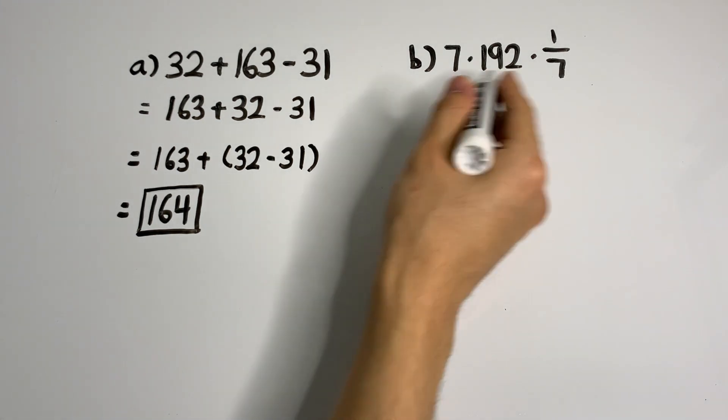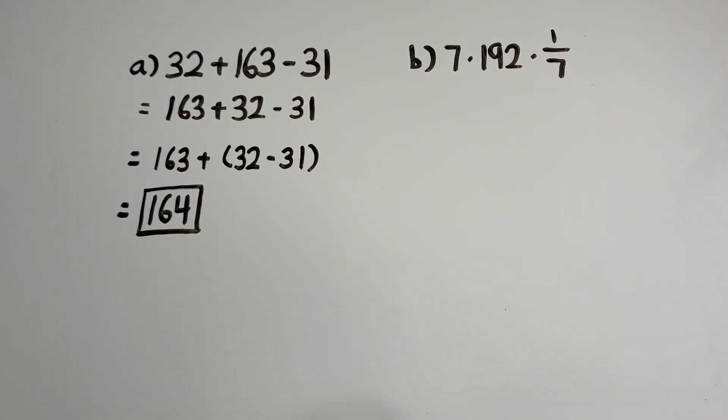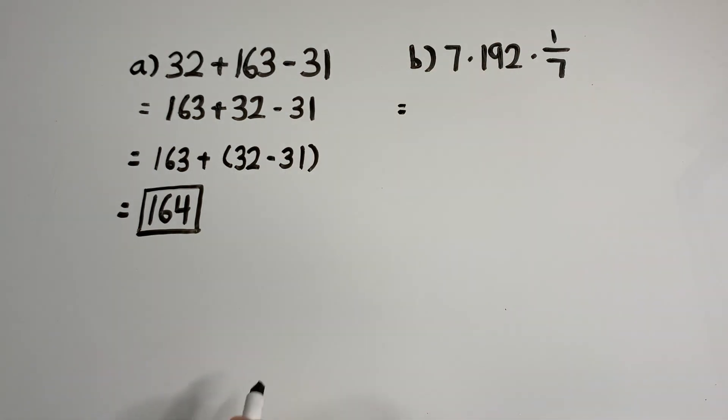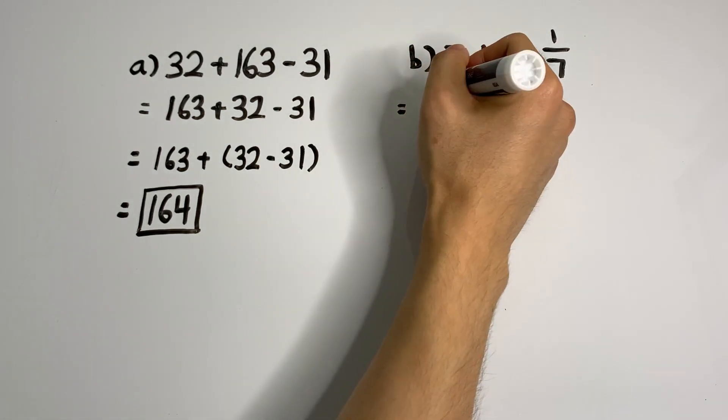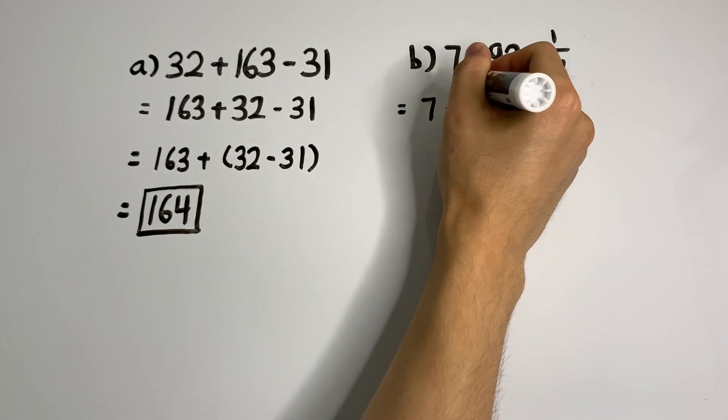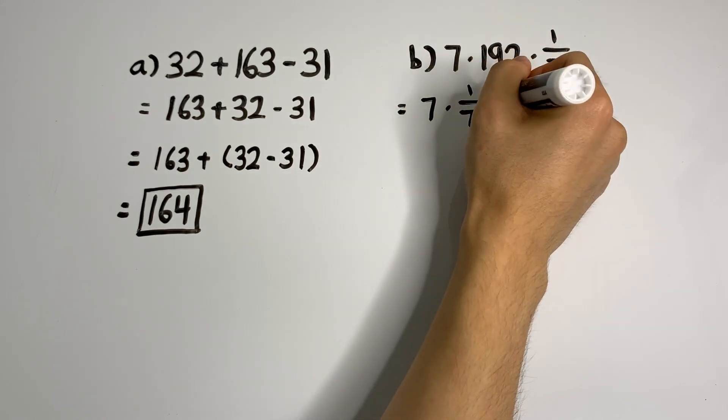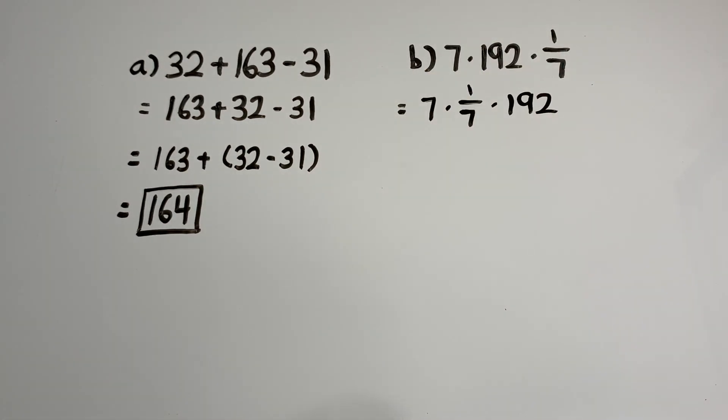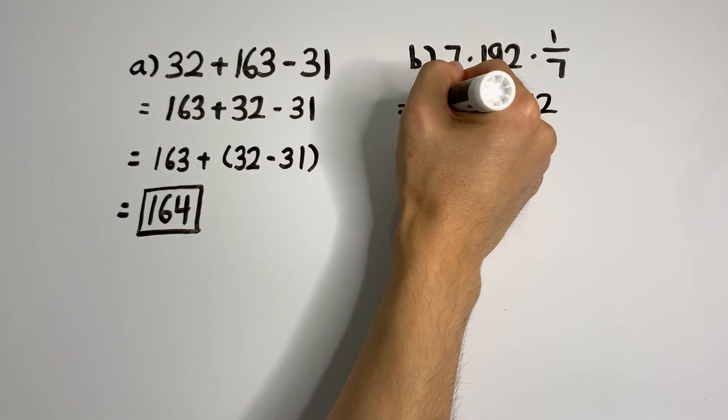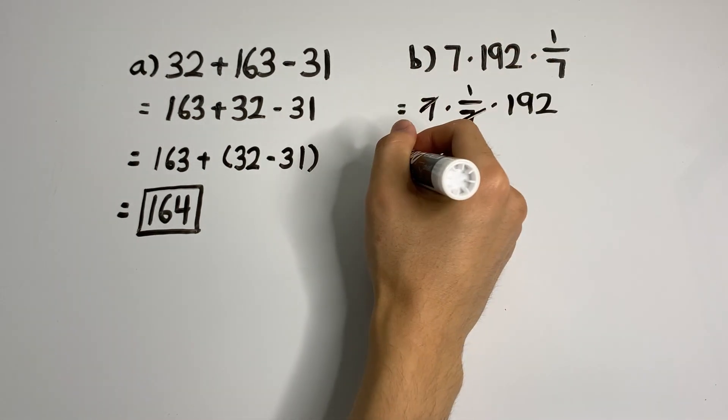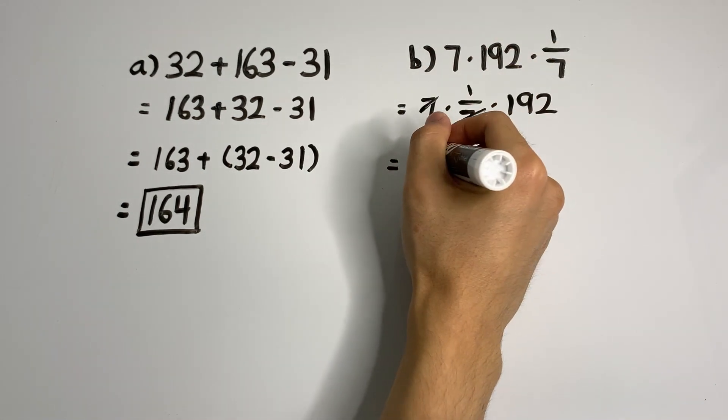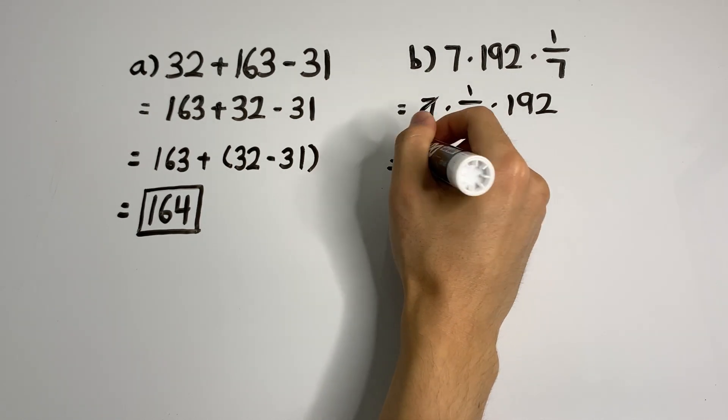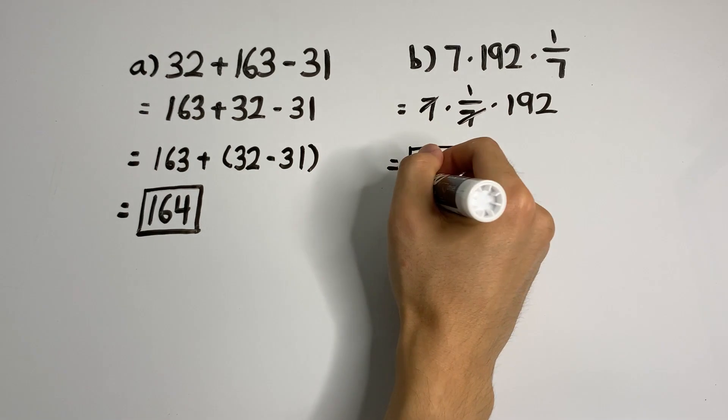In this question, 7 times 192 times 1 over 7 can be better rearranged because we know that the 7's will cancel, and we're just left with a final answer of 192.